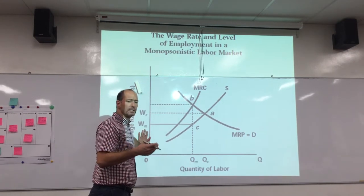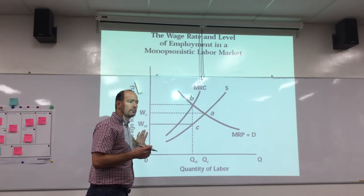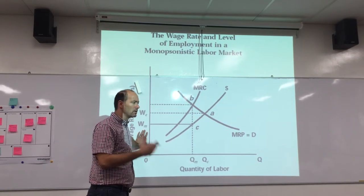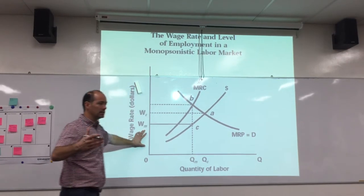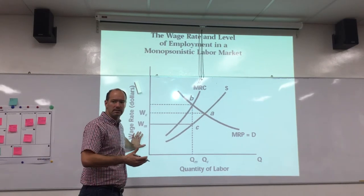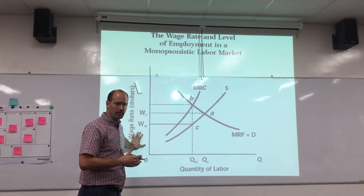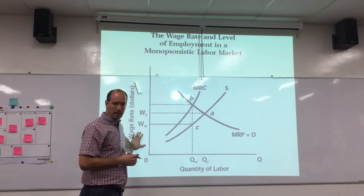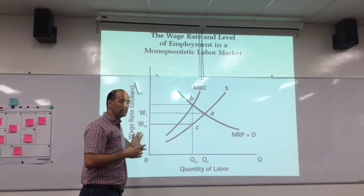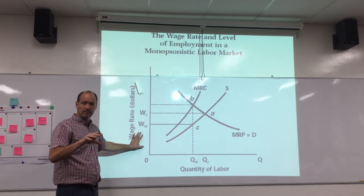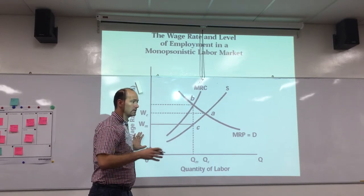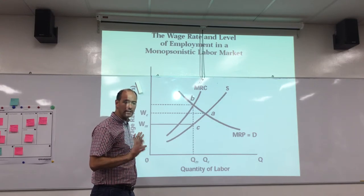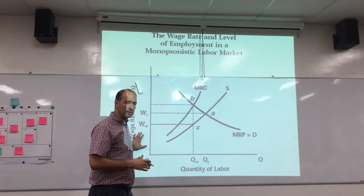The classic example of a monopsonist would be the owner of a coal mine in a small town — say, in a rural area like West Virginia or rural China — where the mine is essentially the only employer in town. Most people in town work for the coal mine. They're geographically isolated, so there aren't other jobs or other places they can go to get work. That gives the coal mine owner a great deal of power in terms of setting the wage.